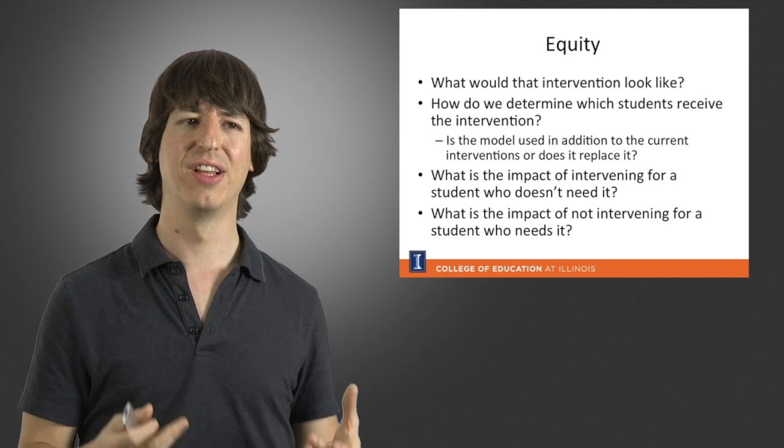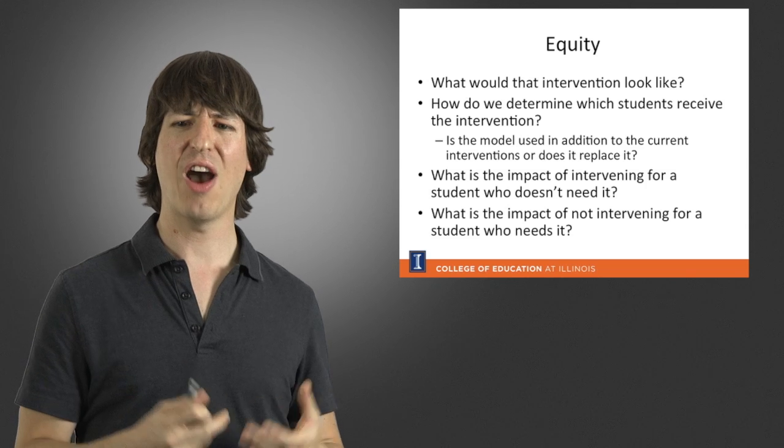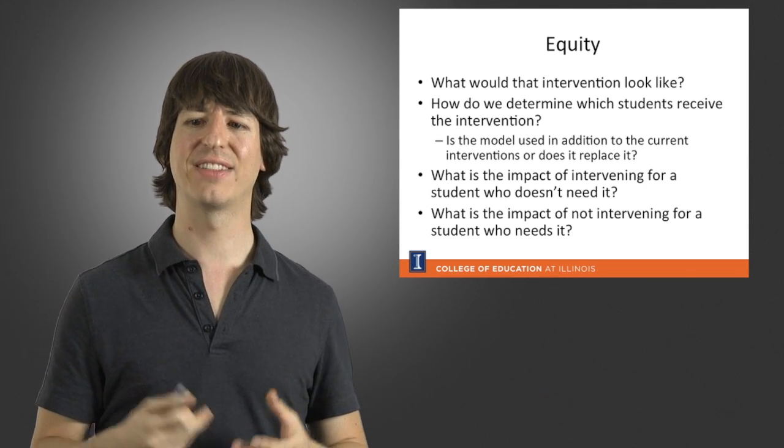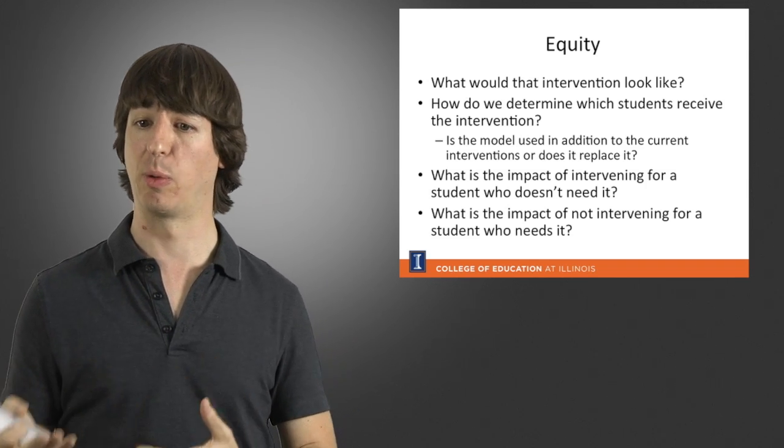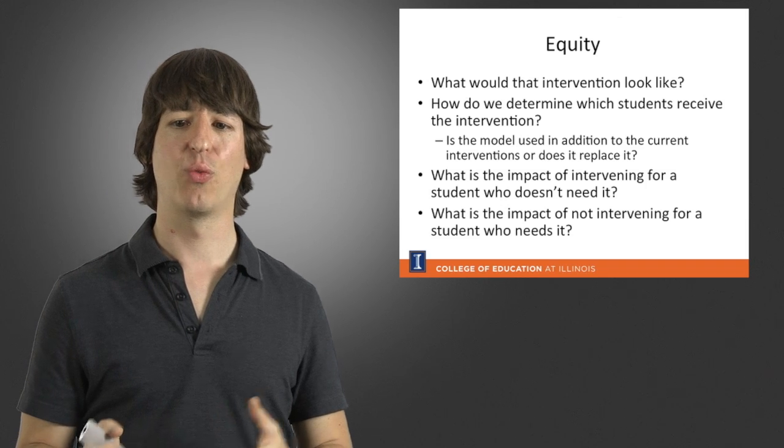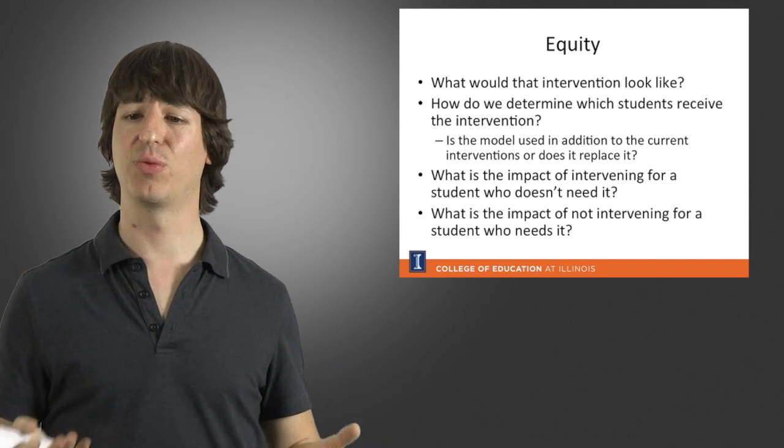So what would the intervention that we would do based on this model look like? And how would we determine which student received those interventions? Is the model used in addition to the current intervention or does it replace it? And if we replace the current intervention with the model, what is the impact of intervening for a student who doesn't need it?